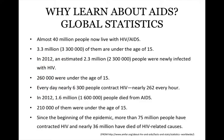Why learn about AIDS? The global statistics are staggering. Almost 40 million people now live with HIV and AIDS, and 3.3 million of them are under the age of 15. In 2012, an estimated 2.3 million people were newly infected with HIV — 260,000 of them were under the age of 15. Every day, nearly 36,300 people contract HIV, nearly 262 every hour. In 2012, 1.6 million people died from AIDS, and 210,000 of them were under the age of 15.